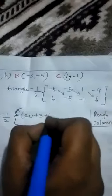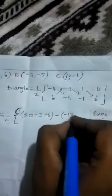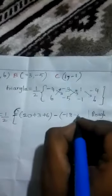-4 into -5 is 20, then -3 into -1 is +3, plus 1 into 6 is +6. Then minus sign in the middle. Then multiply top to bottom: 6 times -3 is -18, then 5 times -1 is -5, and -1 times -4 is +4.